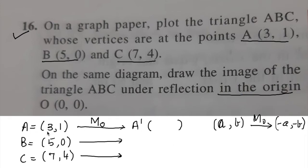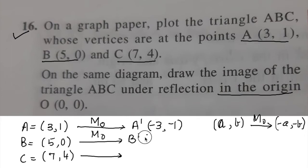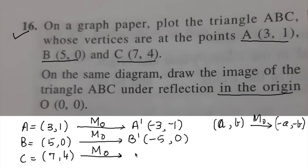Applying this rule: A is (3,1), so A dash becomes (-3, -1). B is (5,0), so B dash becomes (-5, 0) — note that 0 remains 0 as it cannot become negative zero. C is (7,4), so C dash becomes (-7, -4).